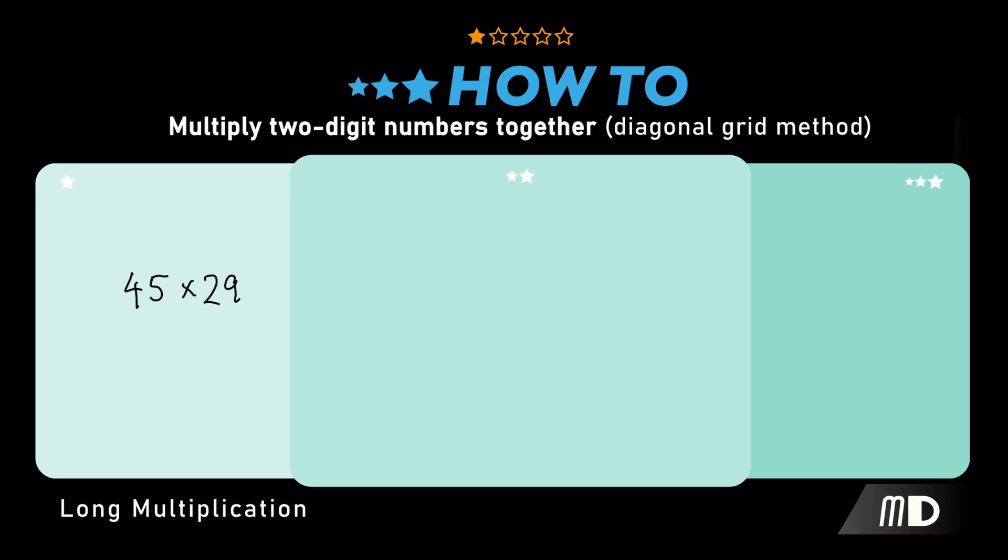And I'm going to draw my grid again with two rows and two columns. But this time I'm going to split each of the spaces in my grid with a diagonal line. That's going to become very important in the last step. You'll see why.